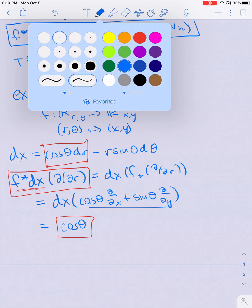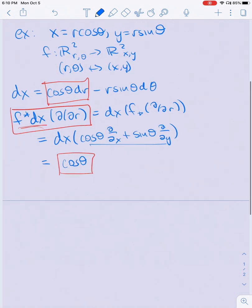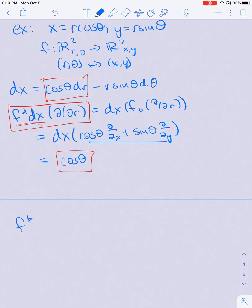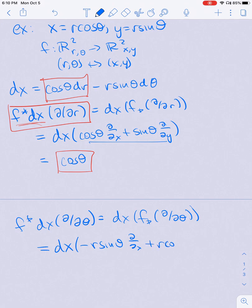Similarly, I can get using this definition of pullback, f pullback dx eating d by d theta is dx eating f push forward d by d theta, which is dx eating negative r sine theta d by dx plus r cosine theta d by dy, the second column of the Jacobian of f. And then this will just be negative r sine theta. So I see that here. Those are equal.